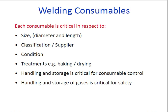Control of each consumable is critical with respect to size, classification, condition, treatment, handling, and storage. You need to check the diameter and length, the classification, and the storage condition as per manufacturer recommendations. Treatment means whether baking or drying is required. Handling and storage must be done carefully, in good atmospheric conditions per the manufacturer's recommendation. Handling and storage of gases is critical for safety.